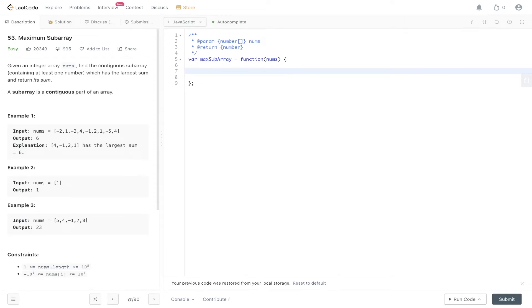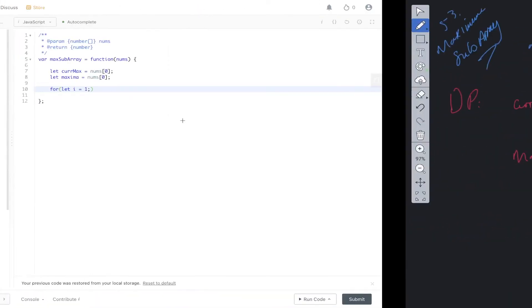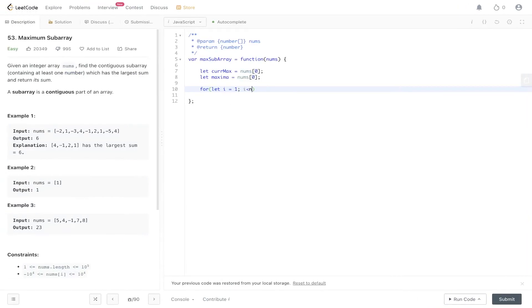So let's start off this dynamic programming solution. So we said that we'd have a current max variable, right? And that's going to be initially set at nums at 0. And then we're going to have a maxima variable, which is going to also be set at nums at 0. So we're going to loop through nums starting from 1. And the reason for this is because we already set this value here. So this is the initial value, which we have set. So we don't need to loop through that. i is less than nums dot length, i plus plus.